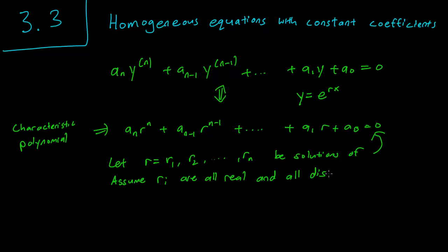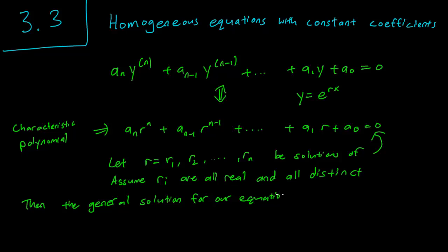We will deal with the case when these assumptions are false in later videos. But the general solution for our equation is y equals c_1 e^(r_1 x) plus c_2 e^(r_2 x) and so on, very much like the case when n equals 2 that we studied before in a previous chapter.